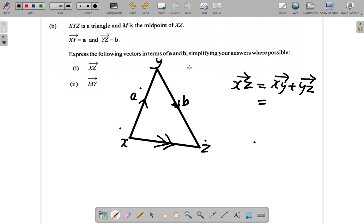But it says in terms of A and B. Now XY is A and YZ is B. So it's A plus B. So XZ is equal to A plus B.